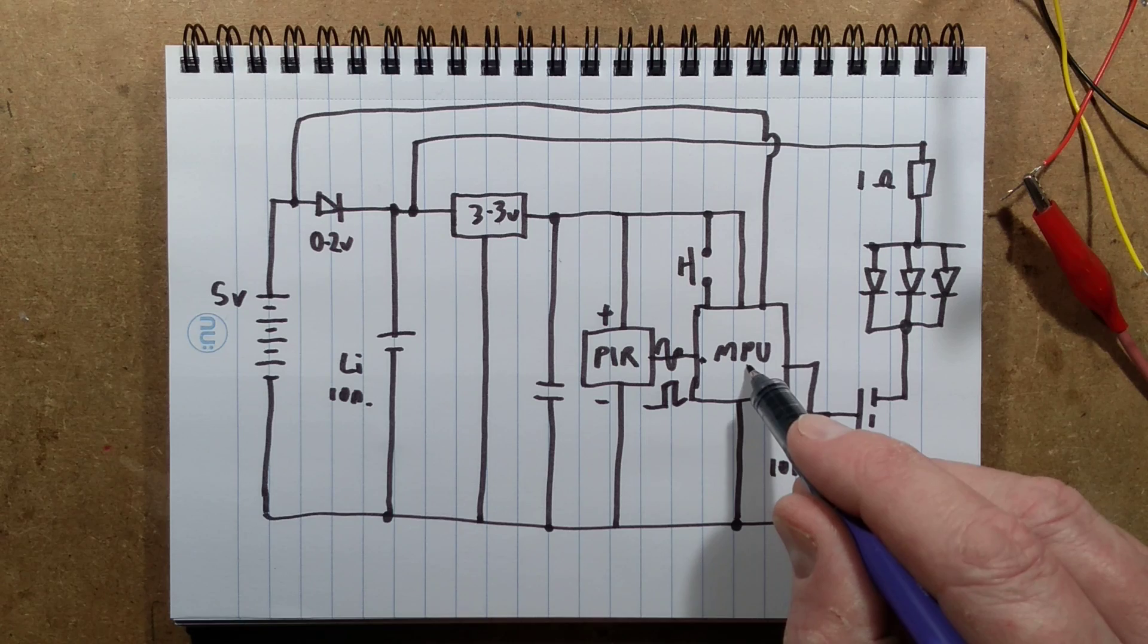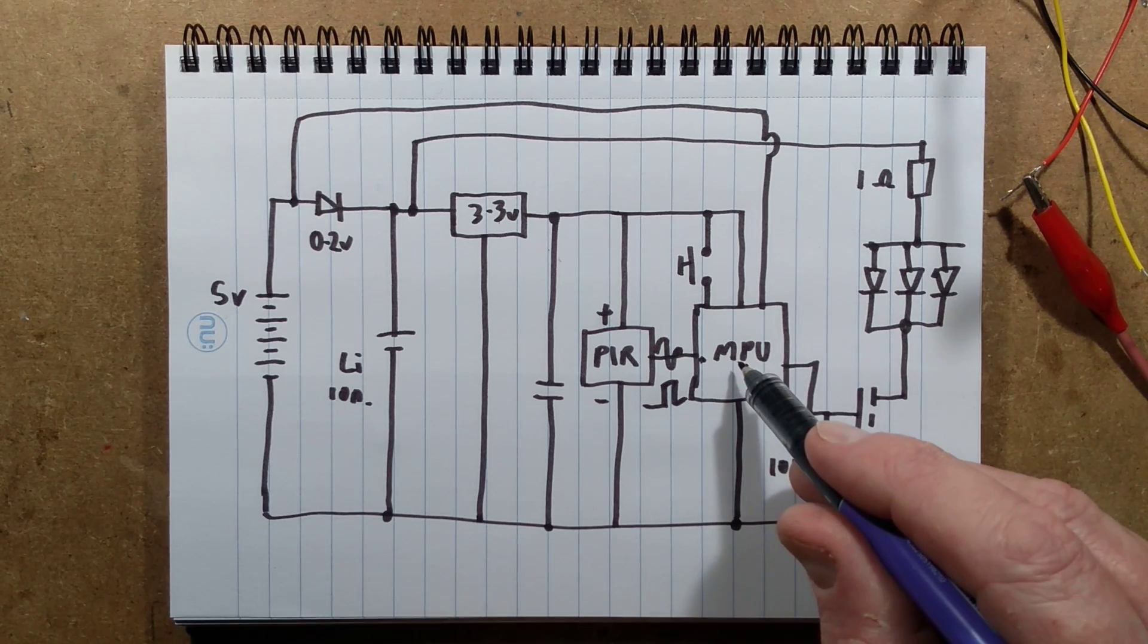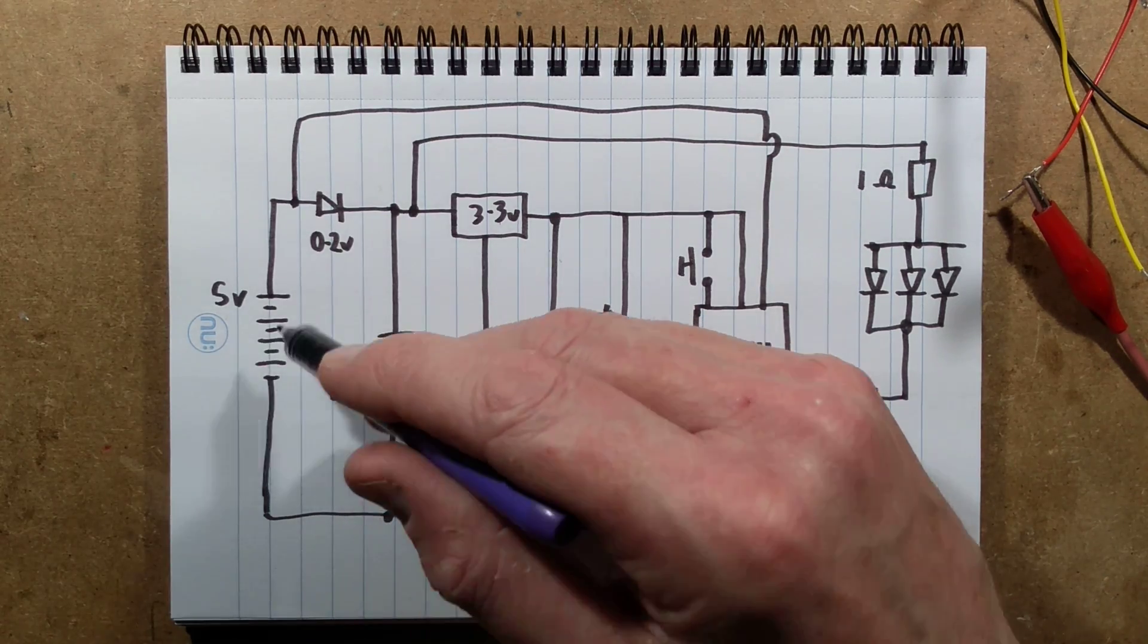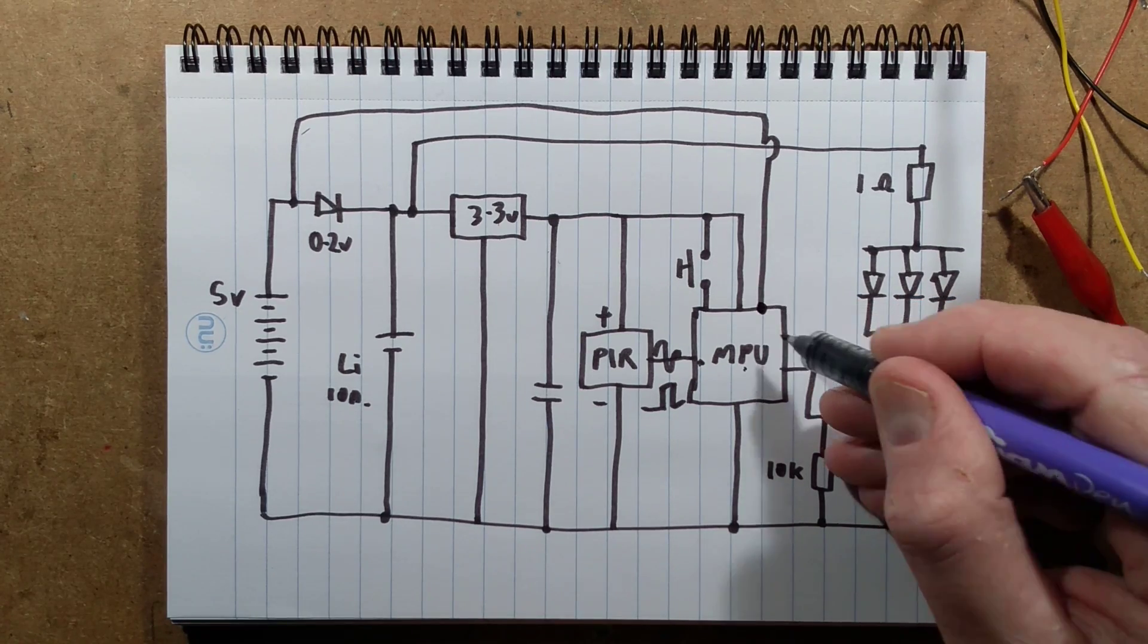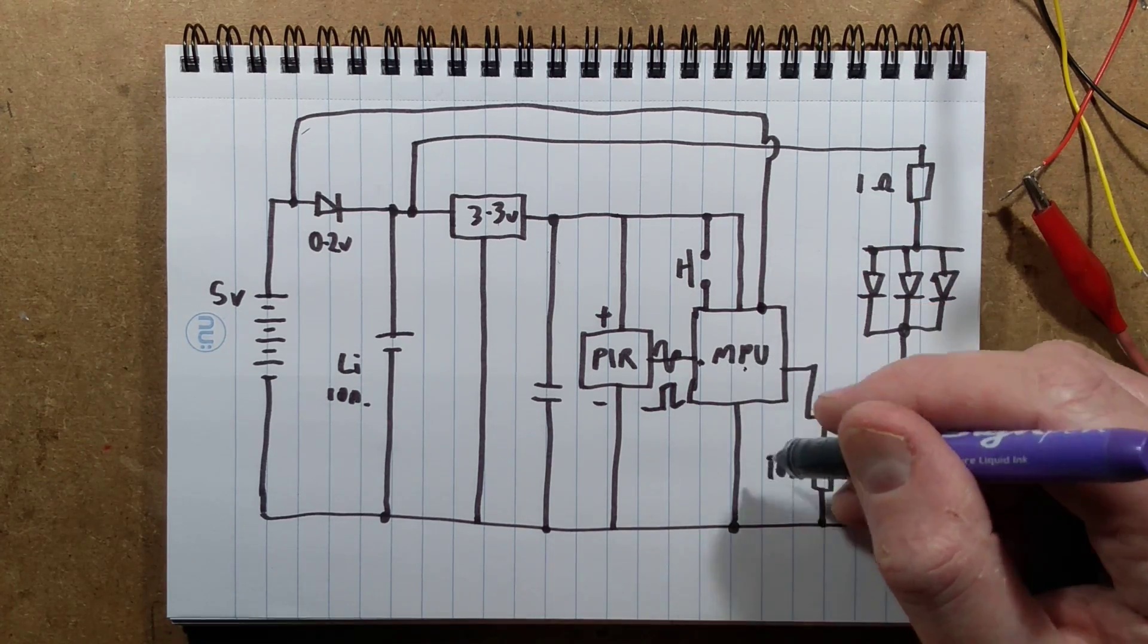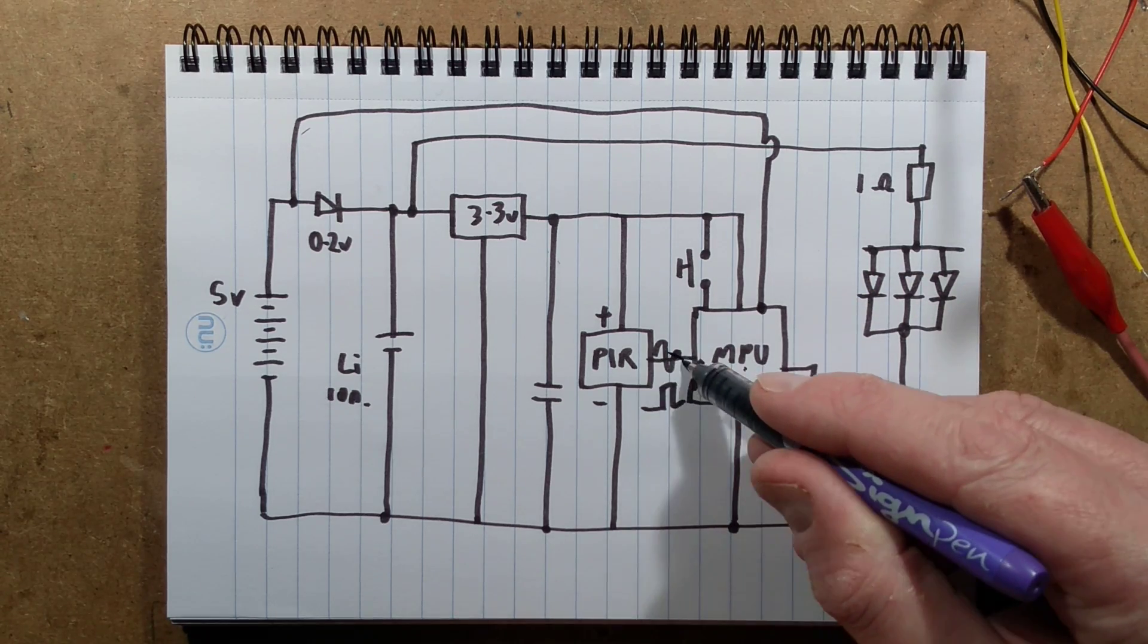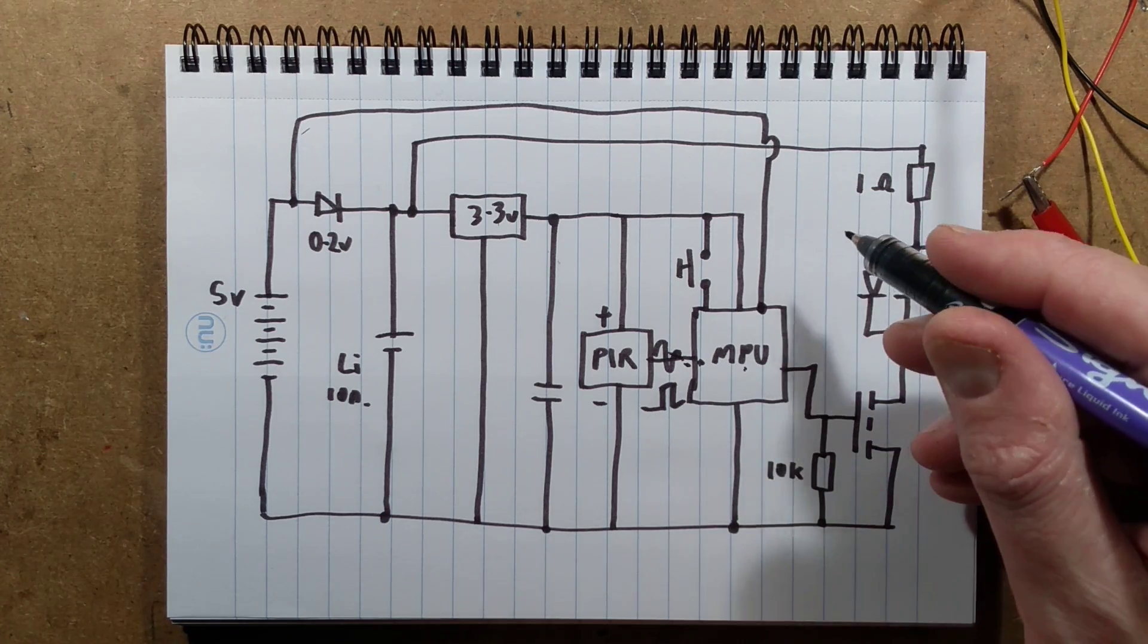When you disturb this, its output goes high for about 7 seconds unless there's continuous movement in the room. If it detects continuous movement, it will just stay high all the time. So it signals to the microcontroller which then when it detects it's dark. And this is the next problem.